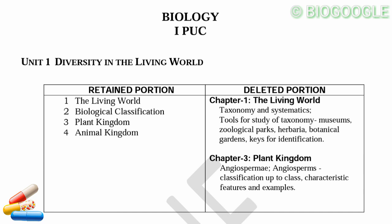On the left side you can delete 10% and on the right side you can delete 10%. So in the first unit, Chapter 1, in the living world, you can delete 10% from the right side. In the second unit you can delete 10% from the right side. In the third unit, the angiosperms classification up to classes, characteristics, features and examples.